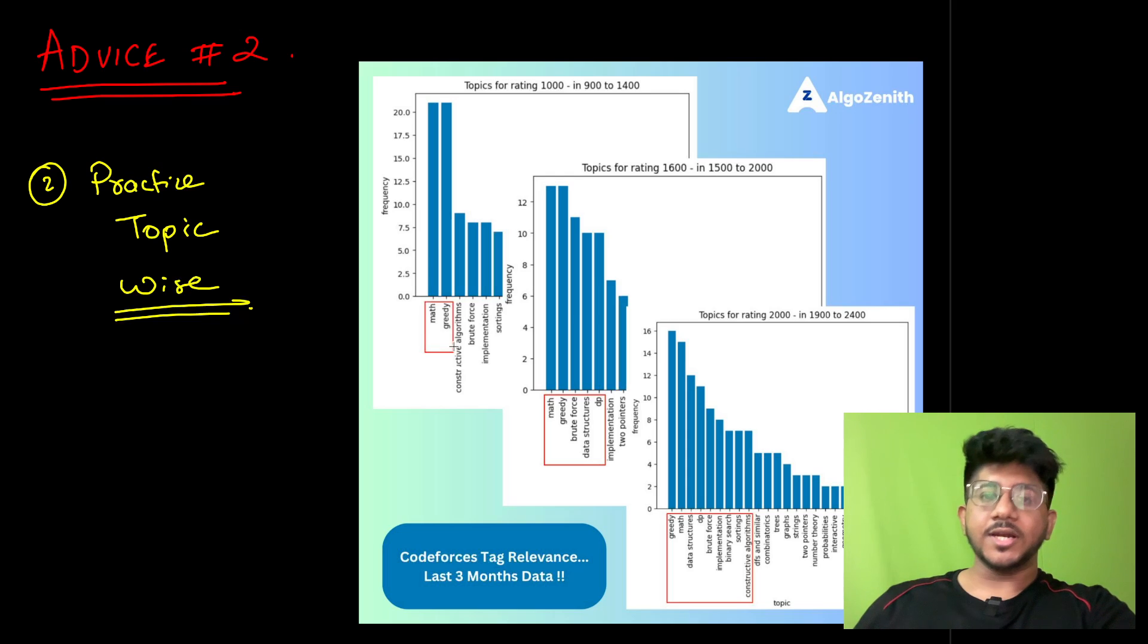So I was doing some analysis to build a course, and what we looked at was when you are in 900 to 1400 rating range problems, the order of topics you can see over here is first, the most common topic is maths followed by greedy. They both have almost equal frequency. This is for recent times. I have not taken things before 2023 because the trends were a little different before that. In 2023, things were maths, greedy, constructive algorithms, brute force, and implementation. So these are the top five topics.